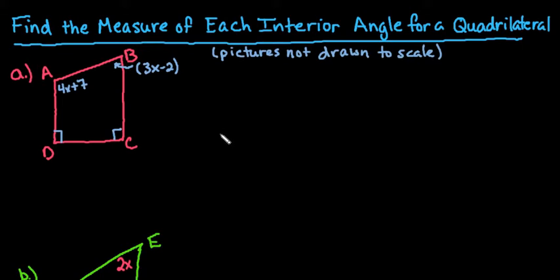In order to find the interior angles, you have to remember that the sum of all of the angles is always going to be 360 degrees, and that's because you can form two triangles with a quadrilateral. In a triangle, the sum is always equal to 180 degrees.